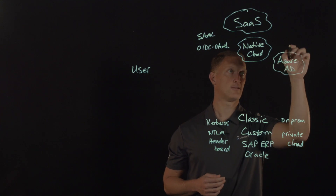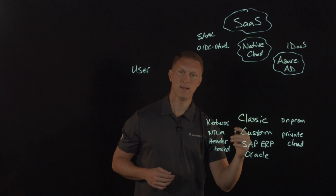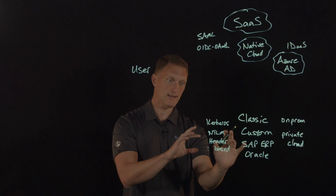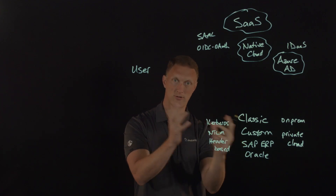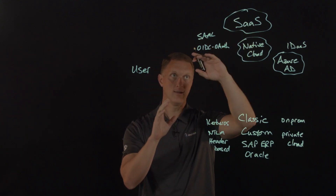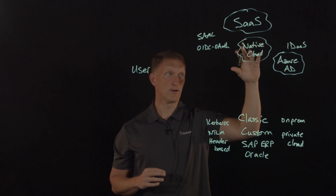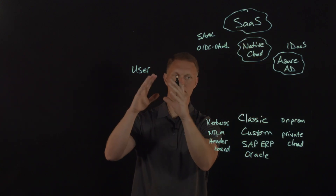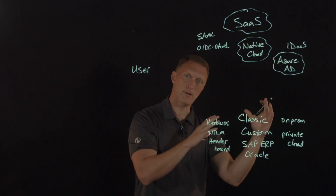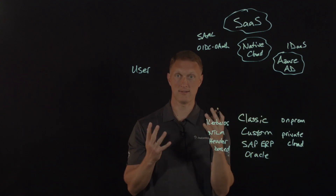Coming back to these users, the users are having to log in here with username and password and certain authentication capabilities. And then over here there's SAML, there's OIDC with OAuth — authenticating up here. But that generates a lot of frustration for users and administrators alike. How do you simplify and centralize all this?